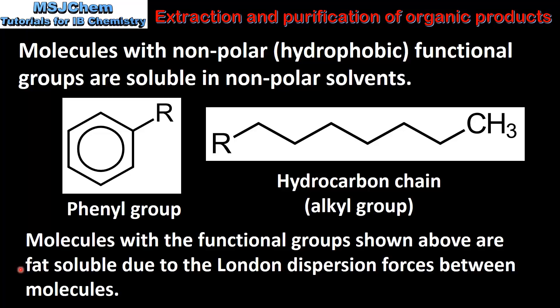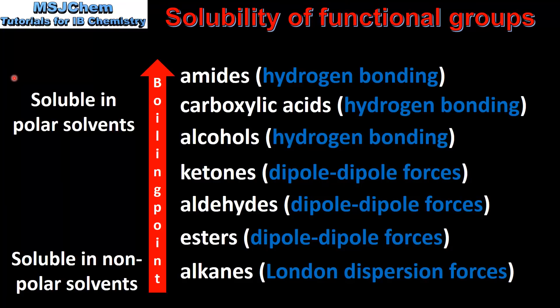Next we look at the solubility of different functional groups. Starting with the alkanes, which are soluble in non-polar solvents, because alkanes are non-polar molecules and are only able to form London dispersion forces between the molecules. At the top of the list we have amides, carboxylic acids and alcohols, which are soluble in polar solvents such as water, as they are able to form hydrogen bonds with water molecules. Ketones, aldehydes and esters are slightly soluble in polar solvents, but their solubility decreases as the length of the hydrocarbon chain increases.